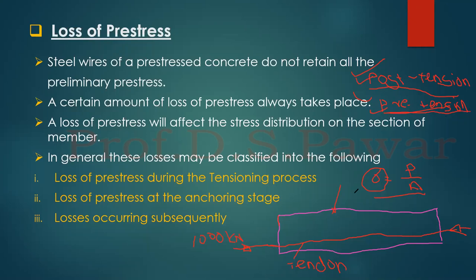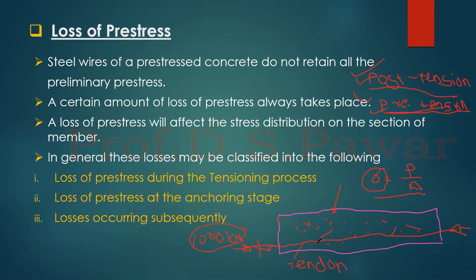In pre-tensioning, the tendon is stressed first, then you put the concrete, and then you cut the tendon and transfer the total pre-stressing force to the concrete. There is a chance that due to friction between the tendon and concrete, there is a loss of stress in the wire. There are various types of such losses that we have to consider while designing this beam.